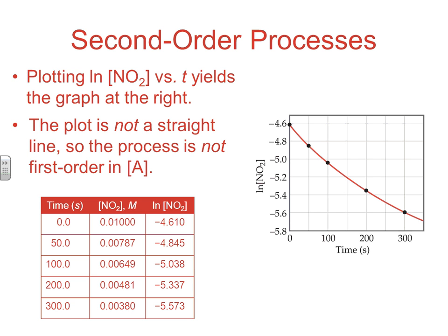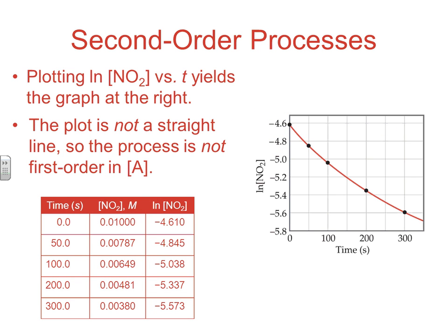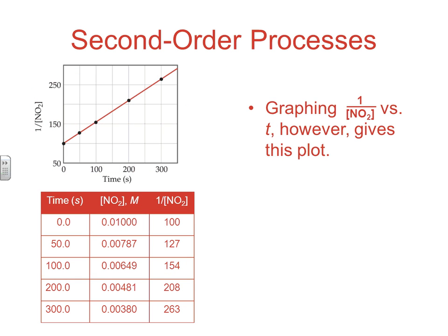The second graph we always look at is the natural log. Since that plot isn't straight either, we can rule out first order. So then we graph the reciprocal. When we graph the reciprocal, we finally get the linear expression. Remember, for second order the line is uphill, so the slope of that line equals k.